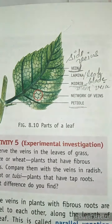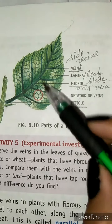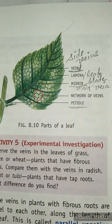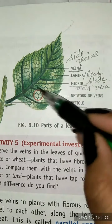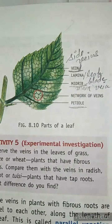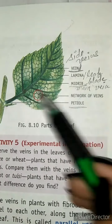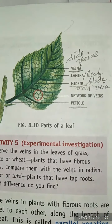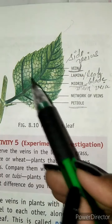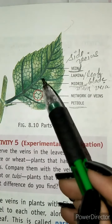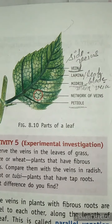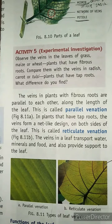The difference between midrib and side veins: the midrib is the main vein and the others are side veins. The arrangement of veins on the leaf is called leaf venation.